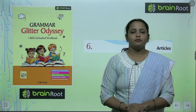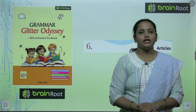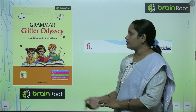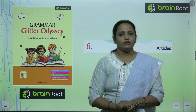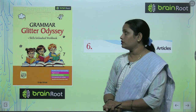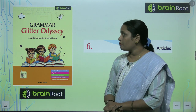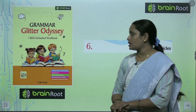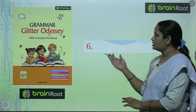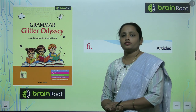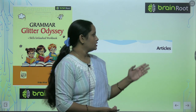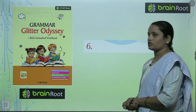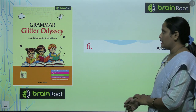Hello my dear kids, welcome back to the Brain Root series by Amit Publishing House Children. I am Vandana and we are doing Book 7 Grammar. The book's name is Grammar Glitter Odyssey. Today we are going to start with Chapter number 6, and the name of the chapter is Articles. Let's see what articles are and revise them.